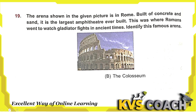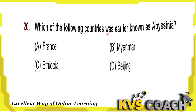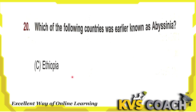Next question: which of the following countries was earlier known as Abyssinia? Option A is France, option B is Myanmar, option C is Ethiopia, and option D is Beijing. So the right answer is option C: Ethiopia was earlier known as Abyssinia.